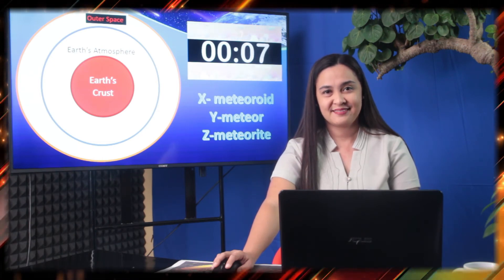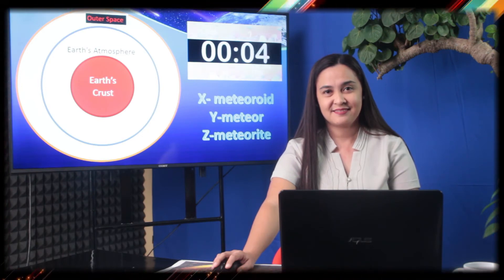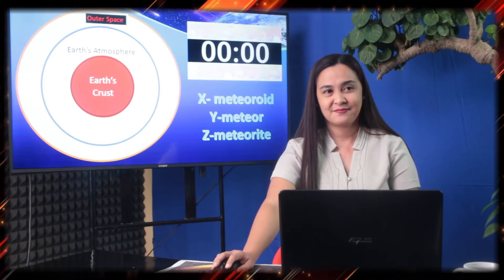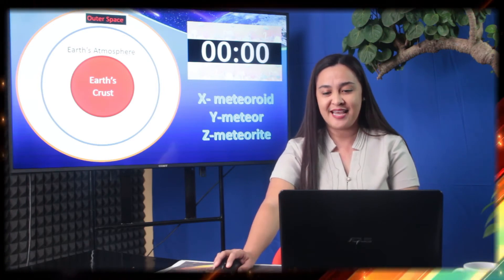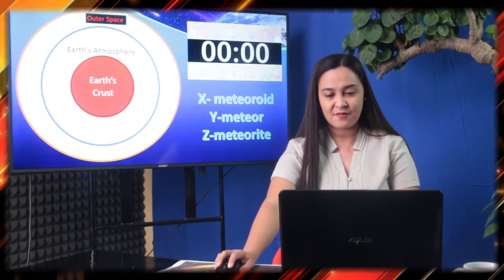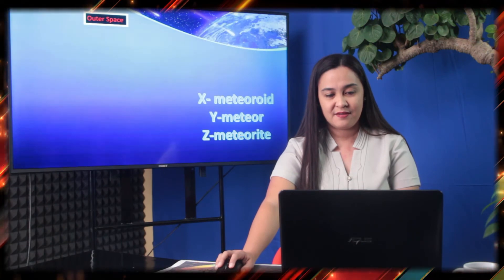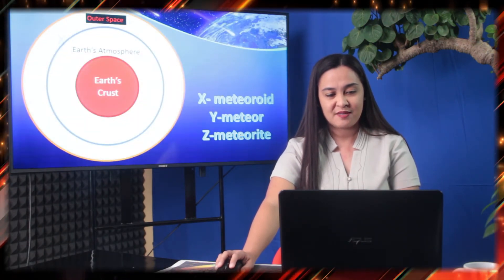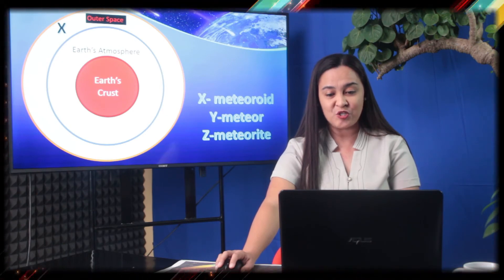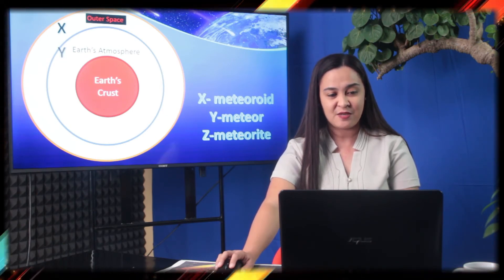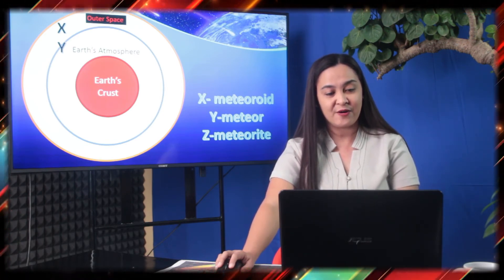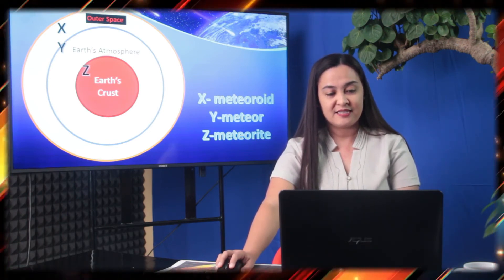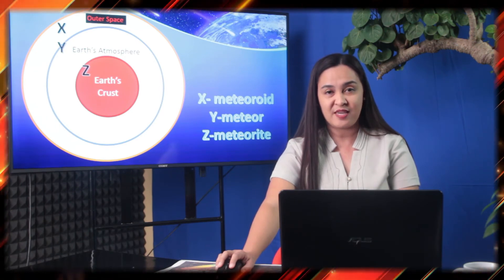7, 6, 5, 4, 3, 2, 1. Time is up. Let's reveal the answer. X mark should be placed within the outer space. Y mark should be placed along the Earth's atmosphere. And the letter Z should be placed within the Earth's crust. Got it? Amazing!